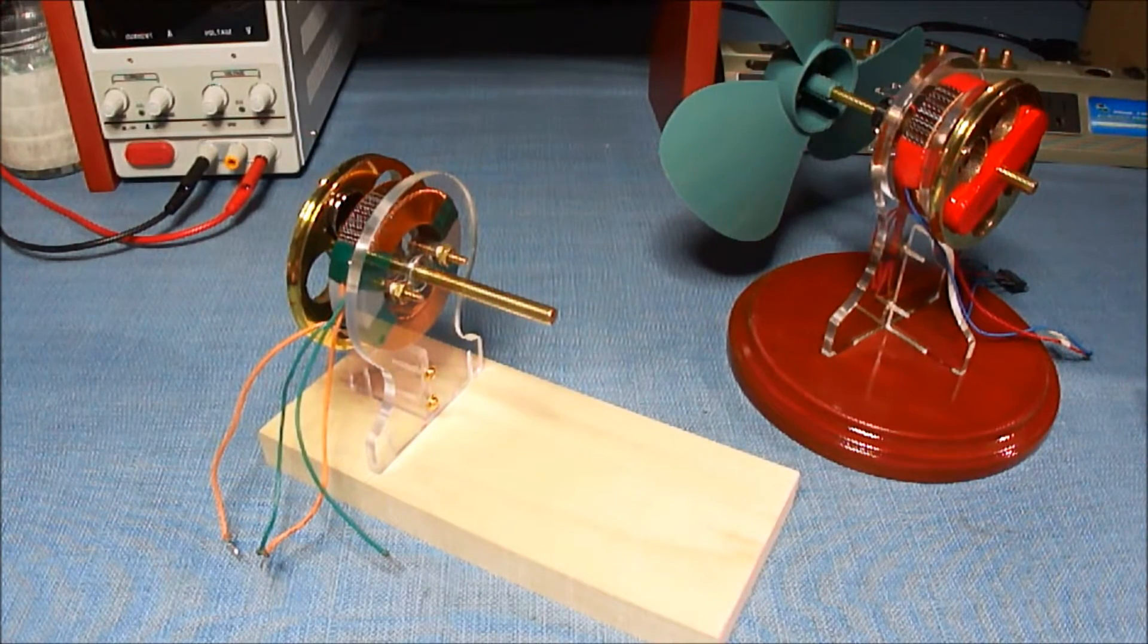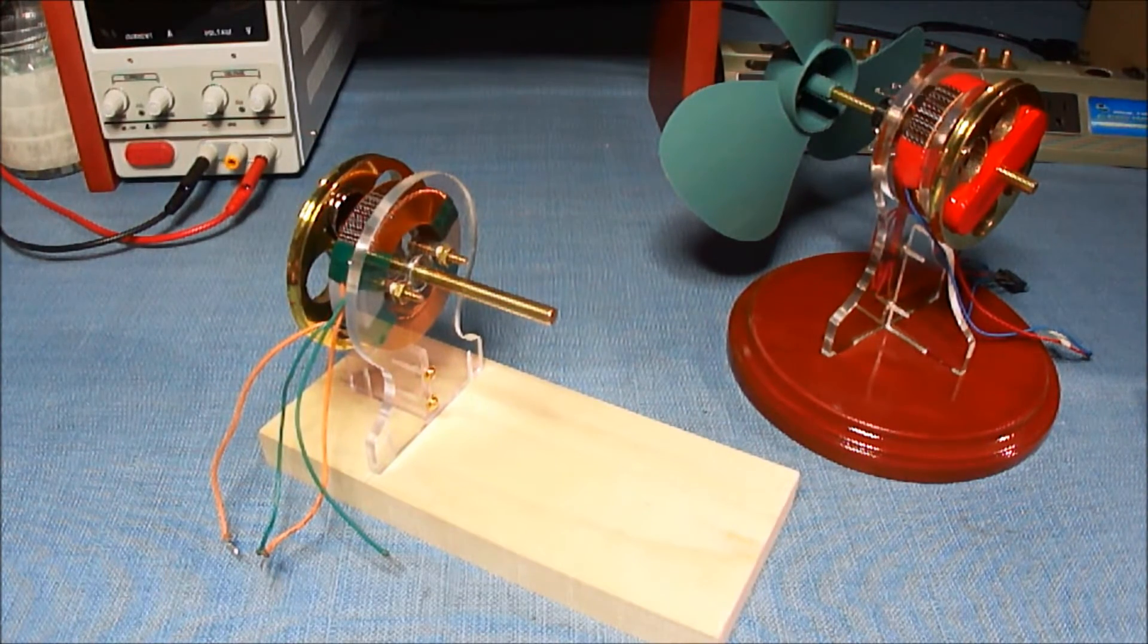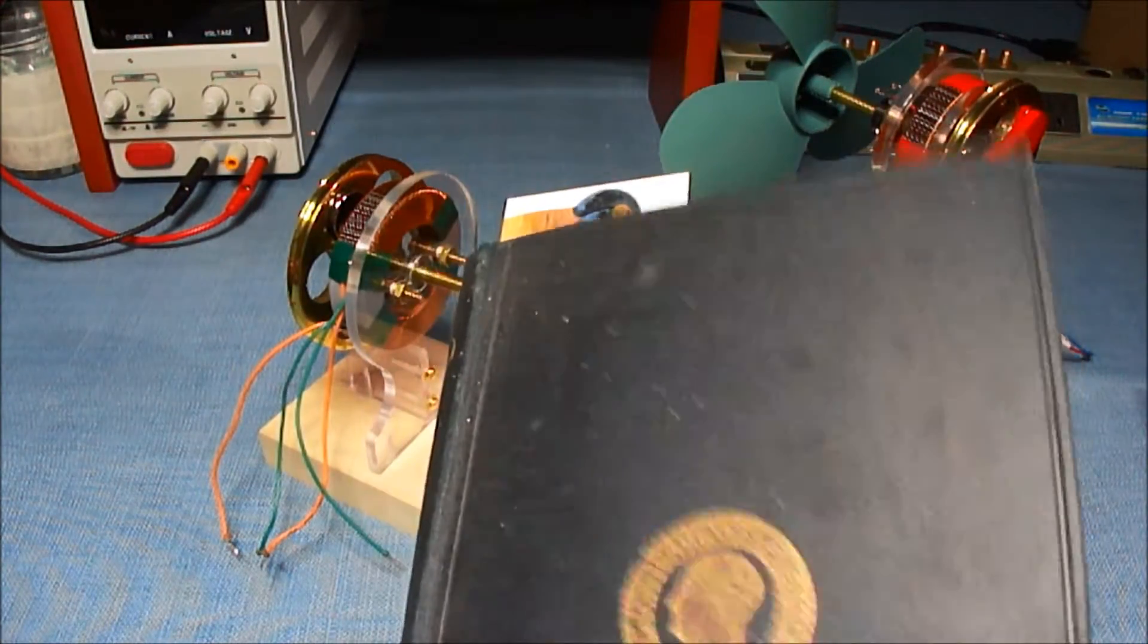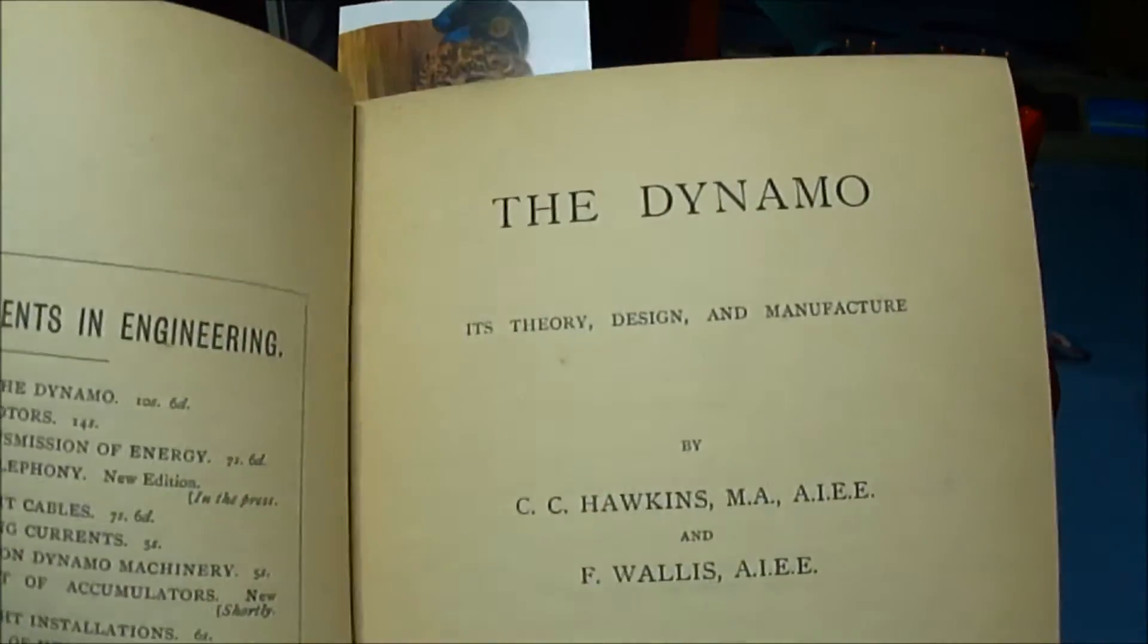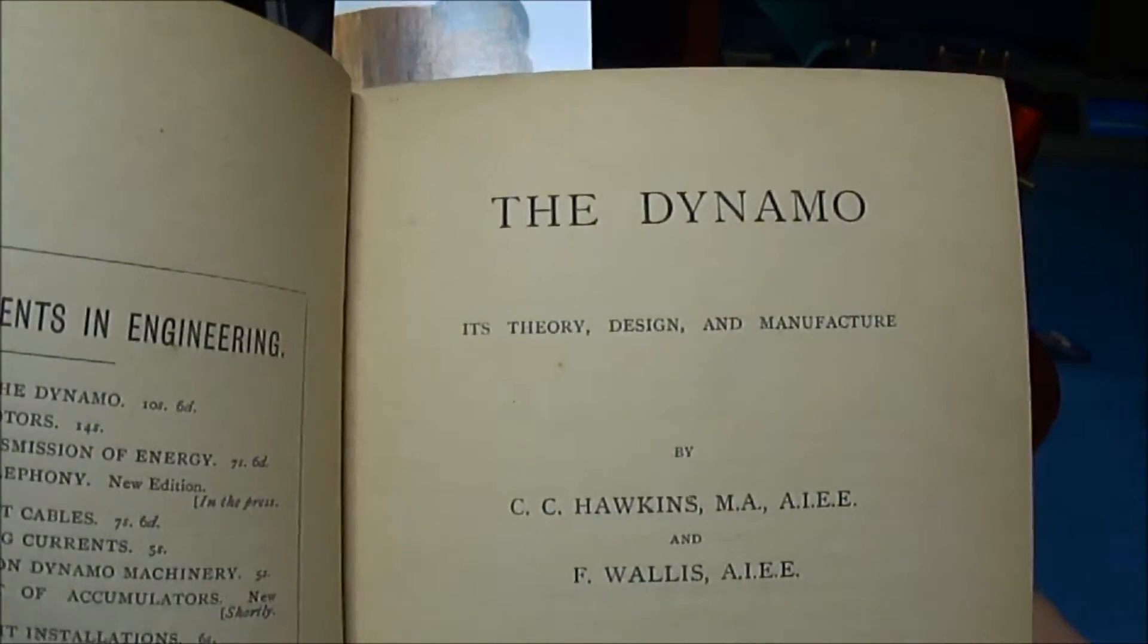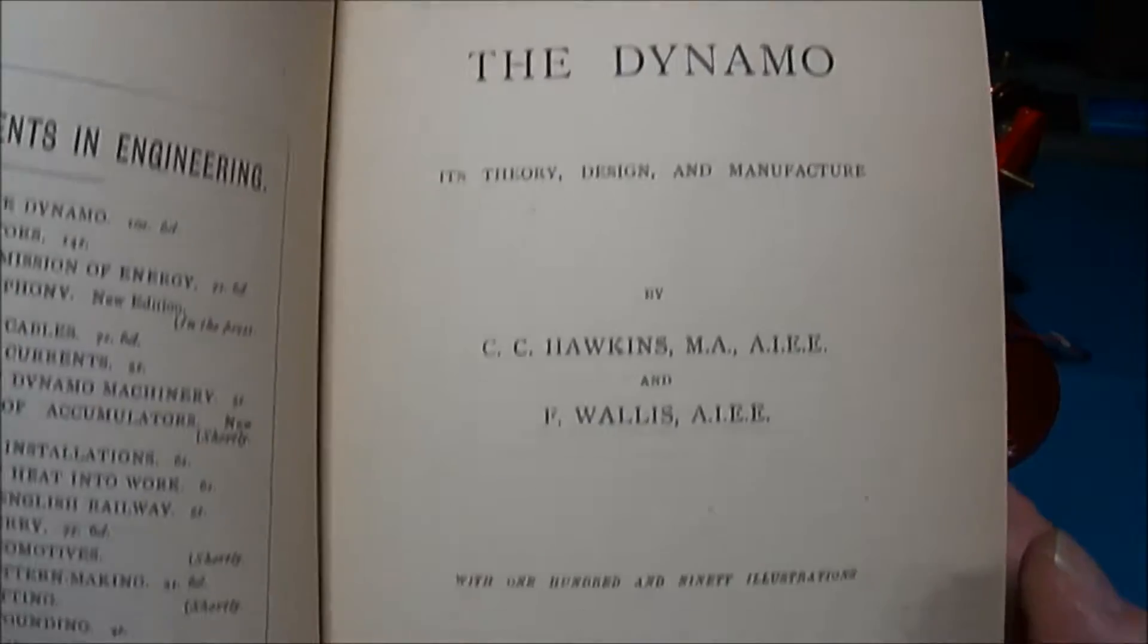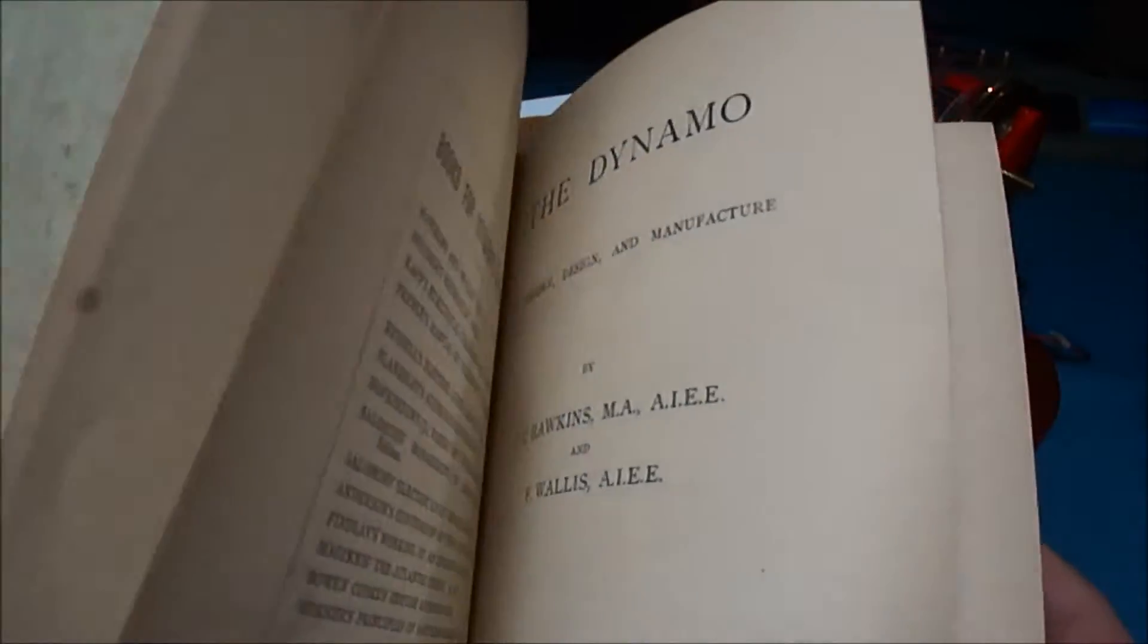The very first generators were called dynamo electric machines. There's some good information in this book from 1893 called the Dynamo. It's theory, design and manufacture by Hawkins and Wallace. And I'll put a link to a PDF version.